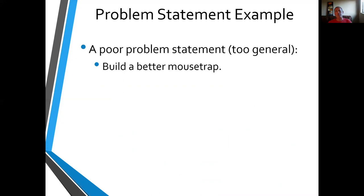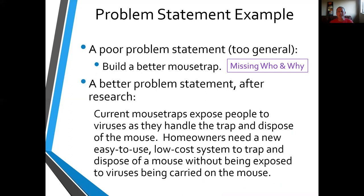So here's a quick example. A poor problem statement might be something like 'build a better mousetrap' — you might've heard that expression. It's not a great problem statement specifically because it misses the who and the why — it's only the what. So how could we rewrite this? Here is a much longer problem statement that includes aspects of the who and the why. First, a little bit of background information that sets the context.